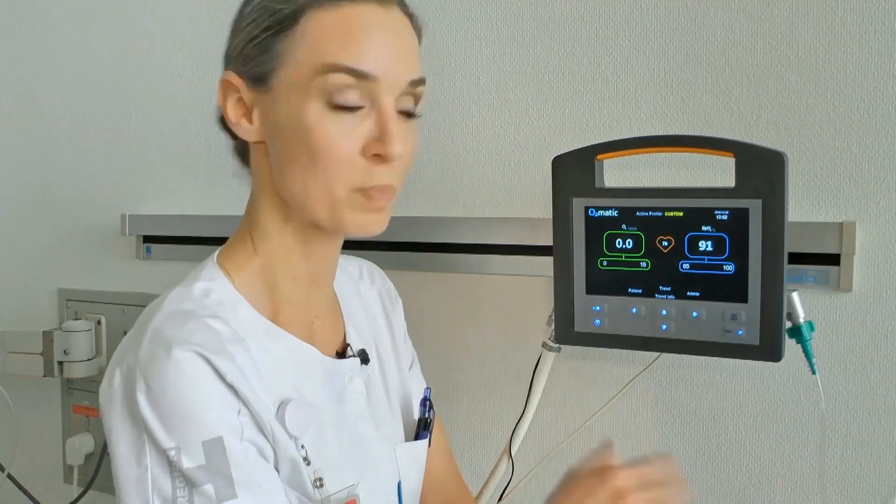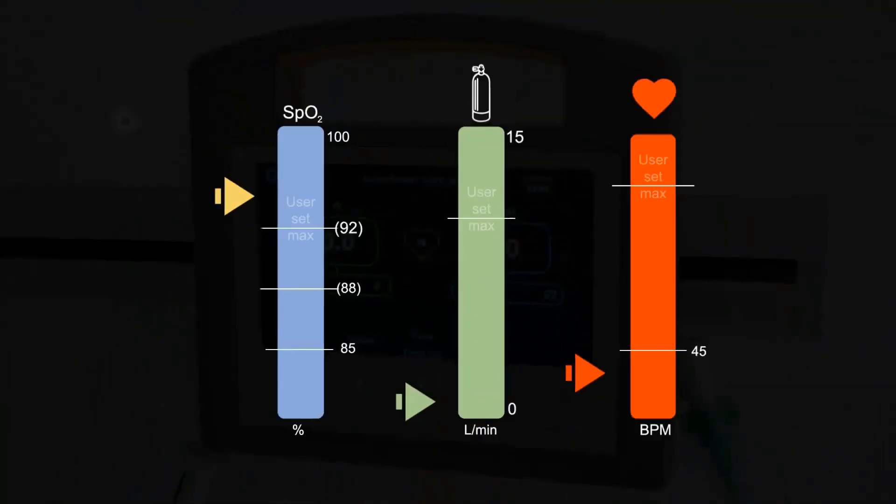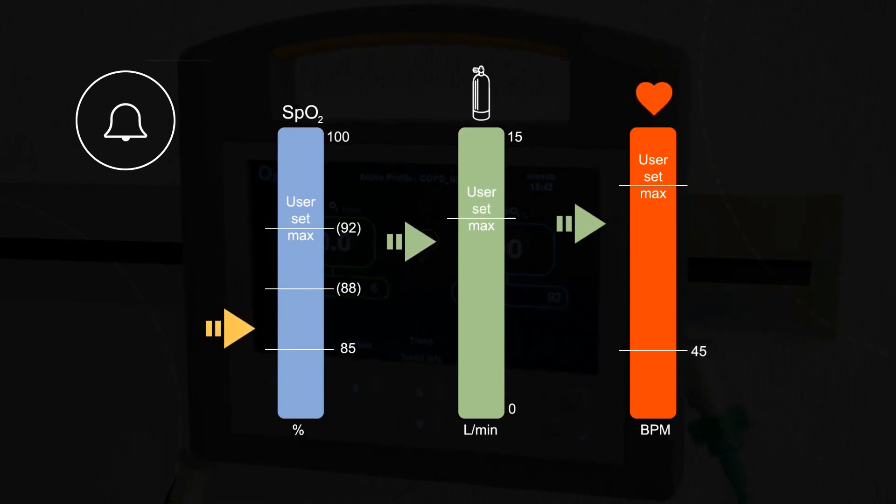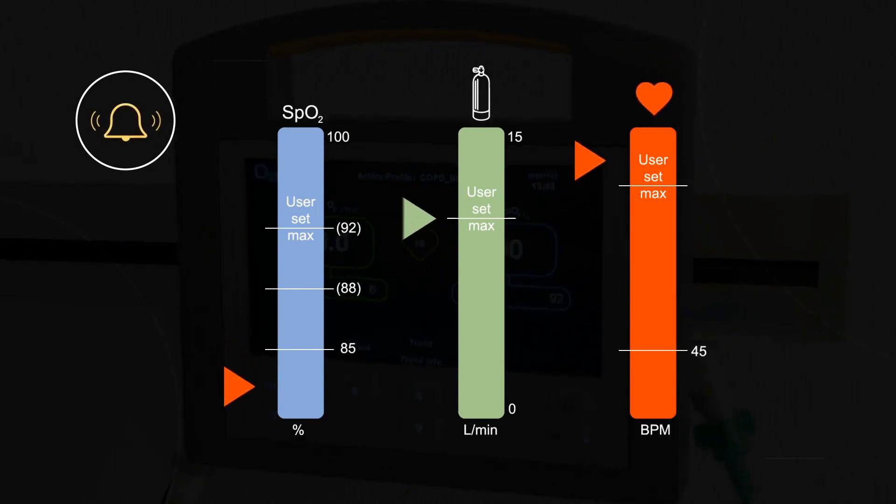In O-matic, any saturation range between 85 and 100 percent can be set. Also, the oxygen flow can be set between 0 and 15 liters per minute. If the saturation falls below the target range or if the pulse rate is outside normal, an alarm sounds.